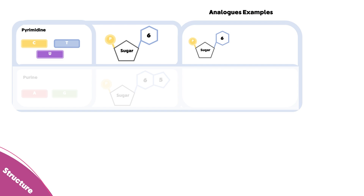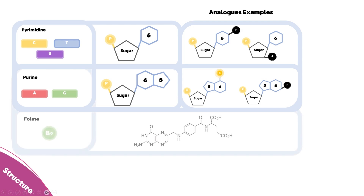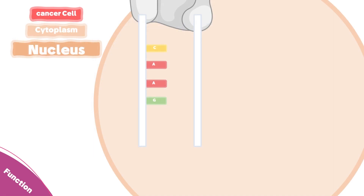Now let's see some examples of the pyrimidine analogues. They consist of the same nucleotide structure except for a fluorine group that can be attached to the six-membered nitrogen base, or it can be attached to the sugar ring. For the purine analogues, they have the same nucleotide structure except for having a sulfur group or a fluorine group attached to the six-membered ring. The folate structure is quite complex but the same concept applies.